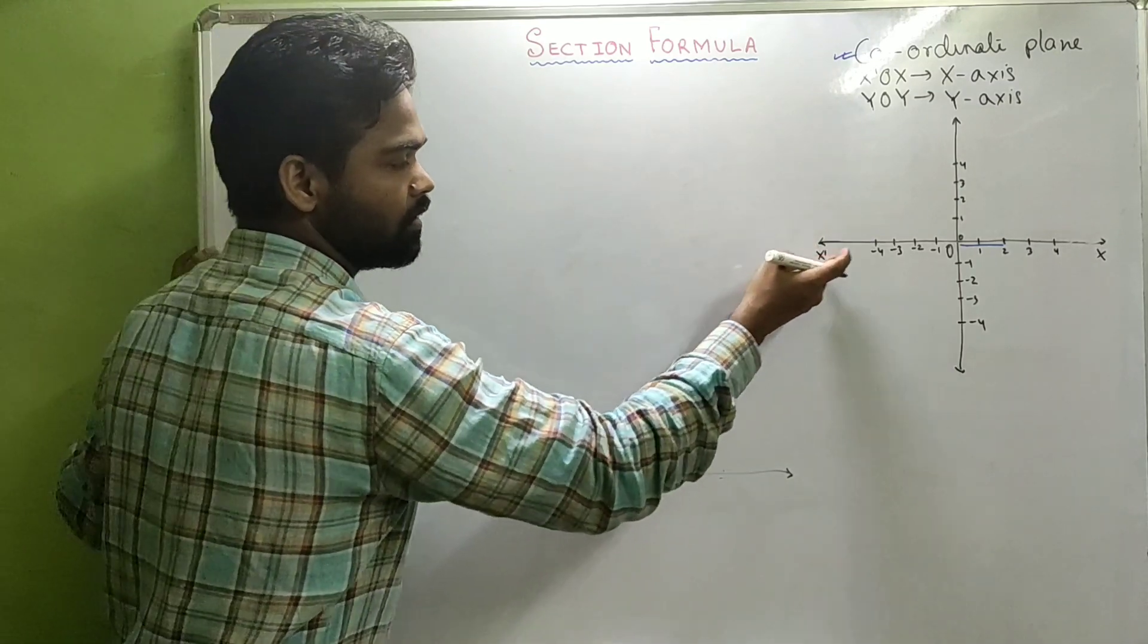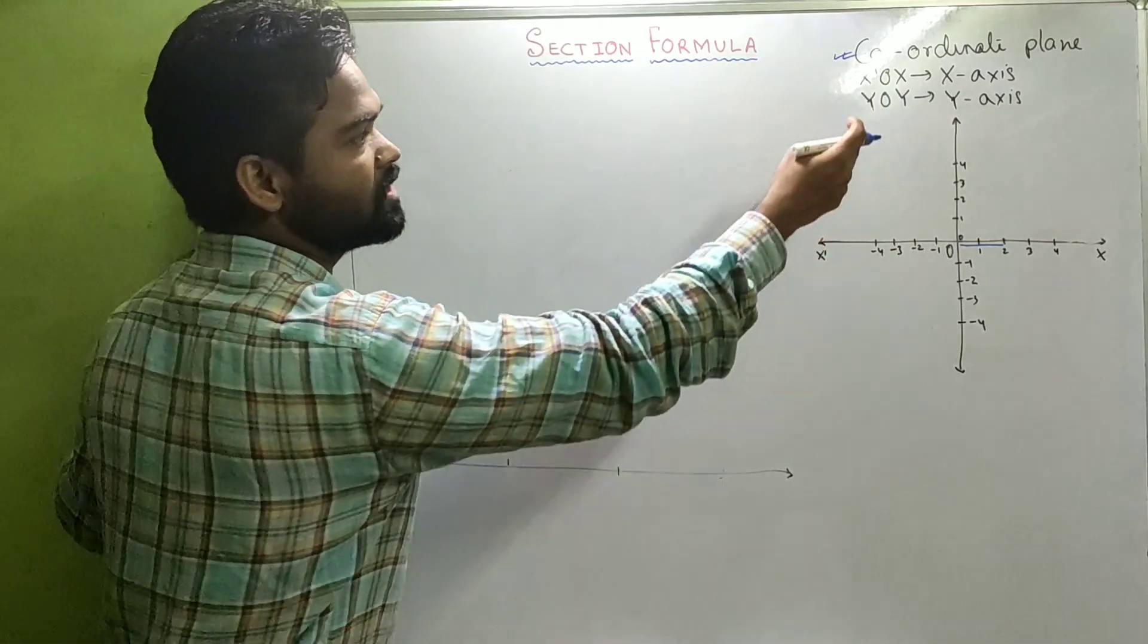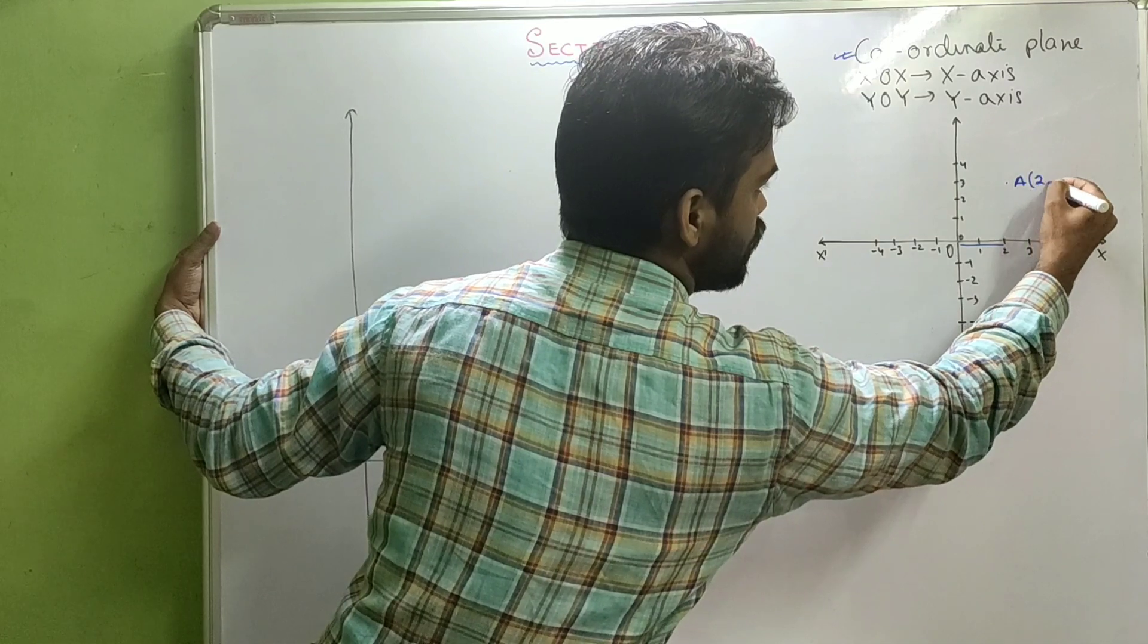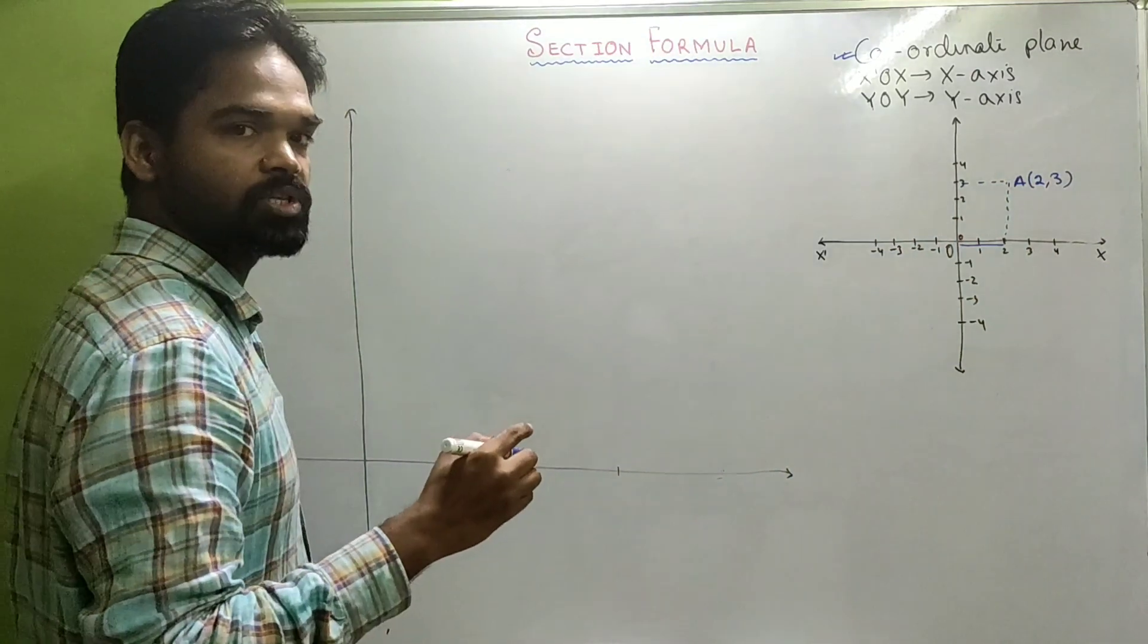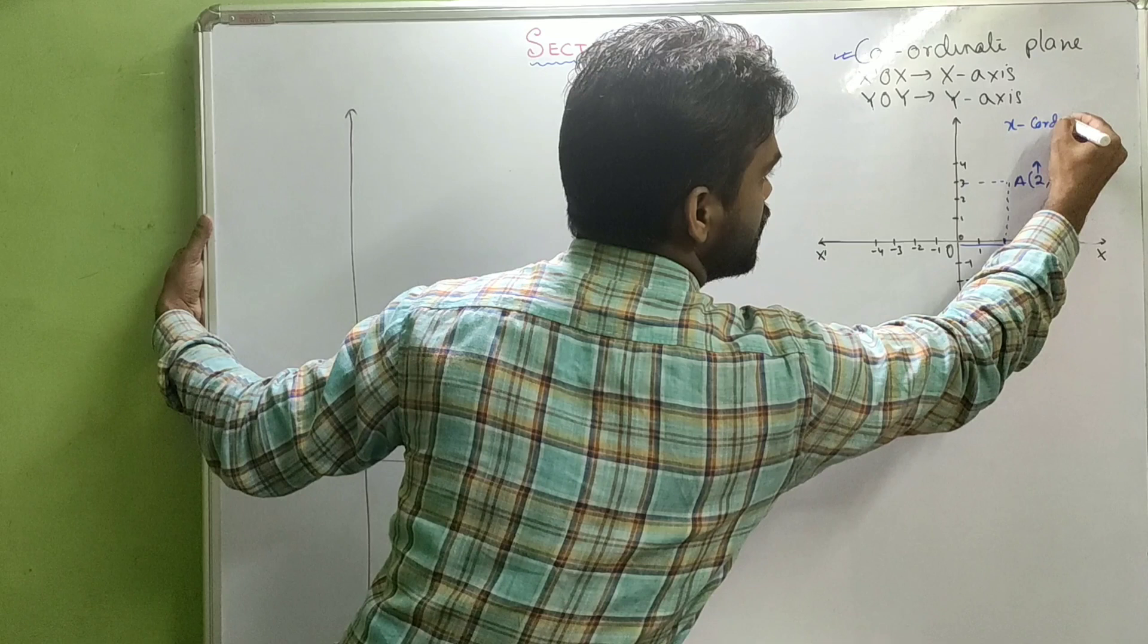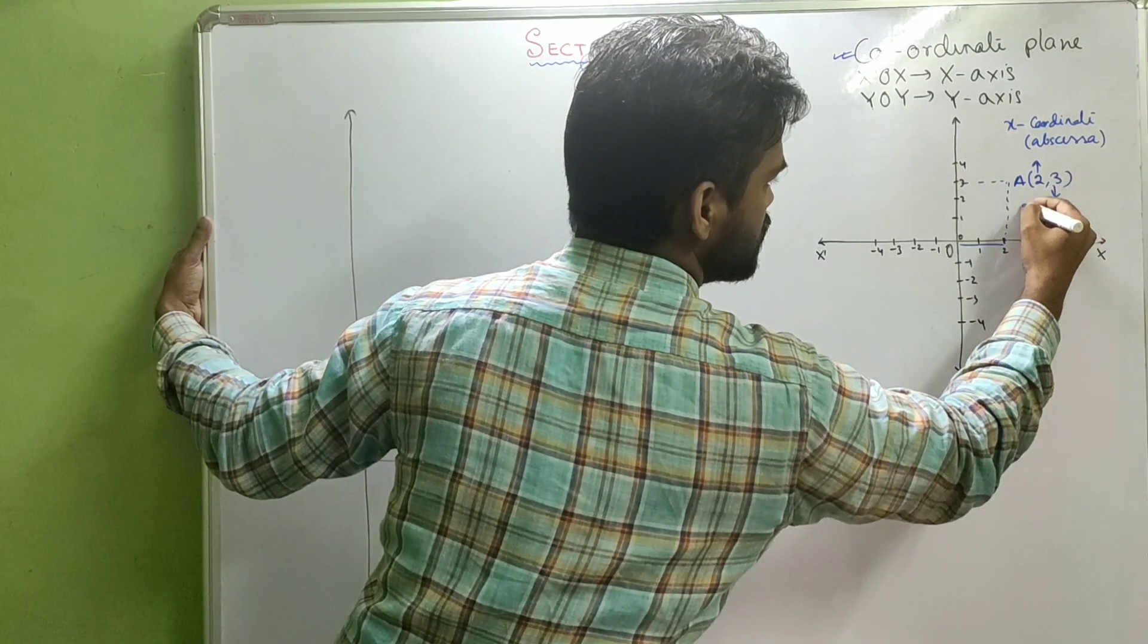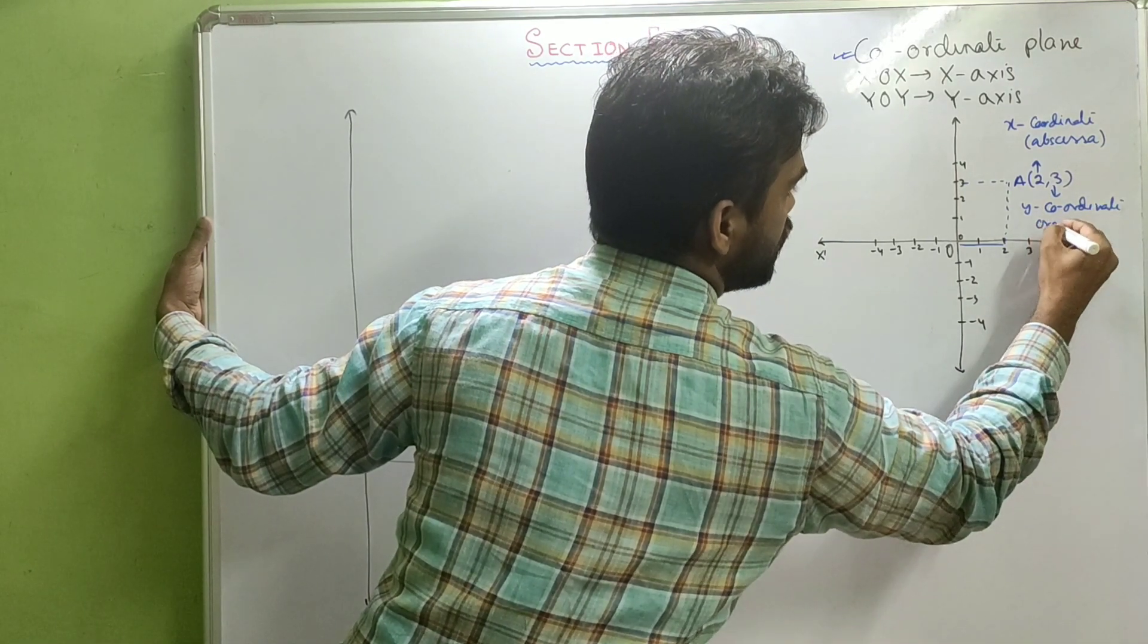Where the horizontal number line is known as x-axis and the vertical number line is known as y-axis. And any point in that plane, suppose A, is represented by an ordered pair. In this case, it's 2,3. The first one is your x-coordinate, also known as abscissa. The second one is your y-coordinate, which is known as ordinate.